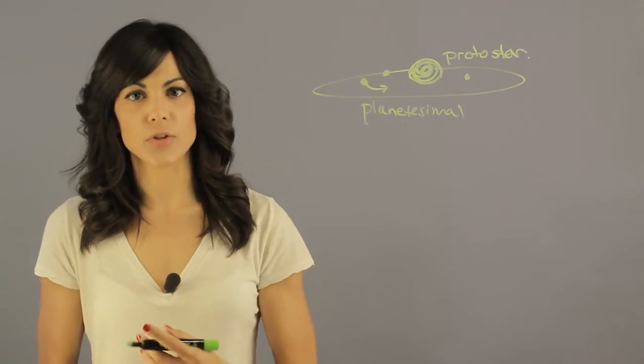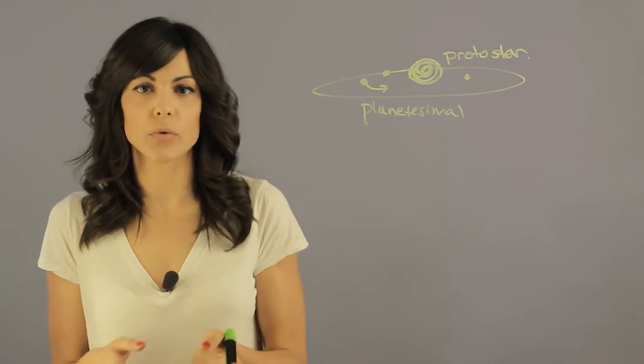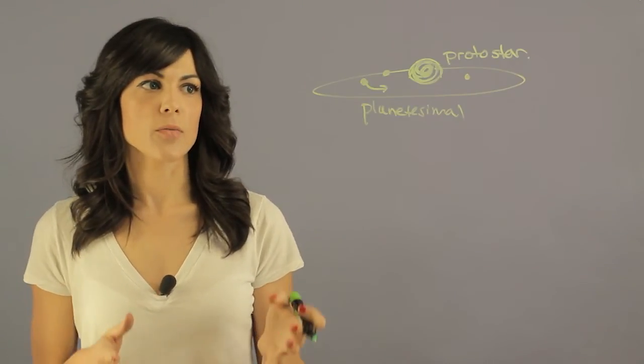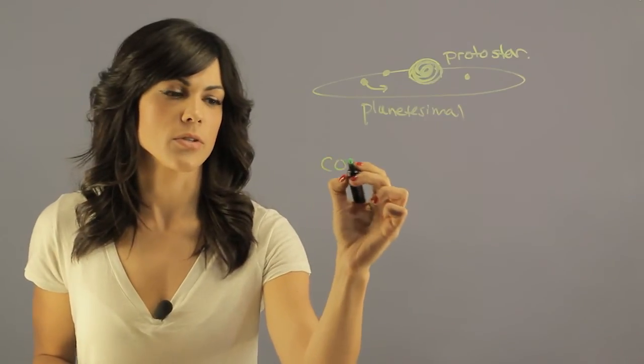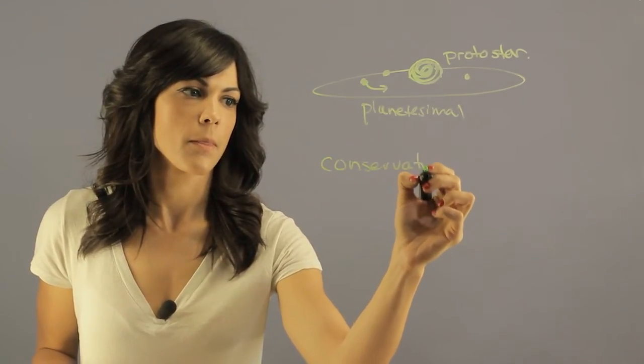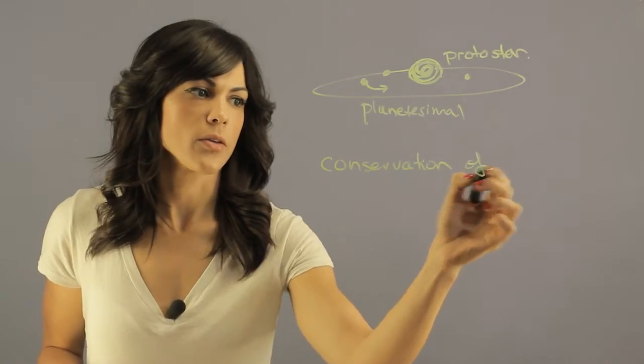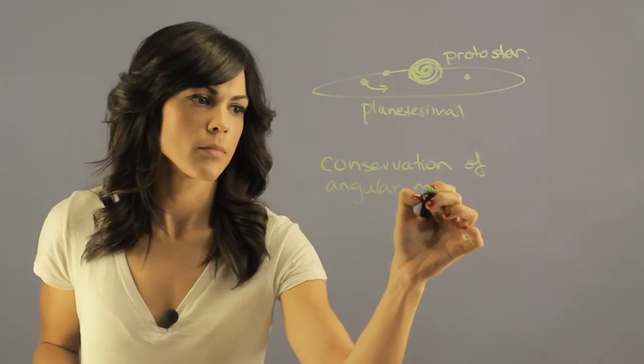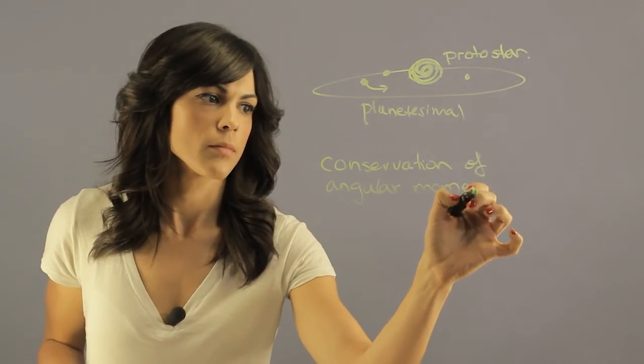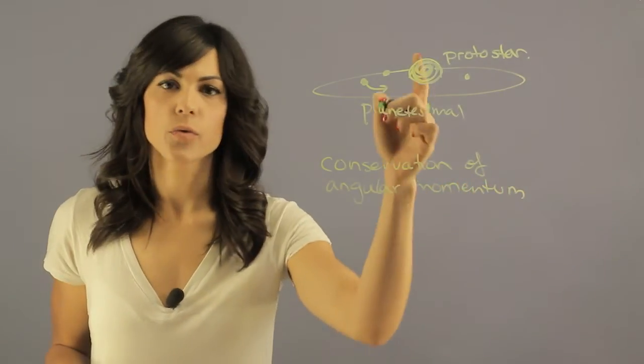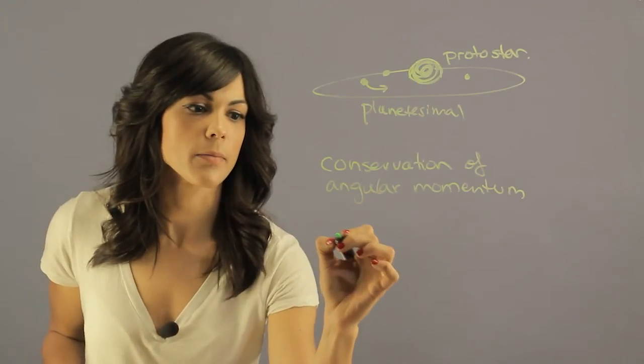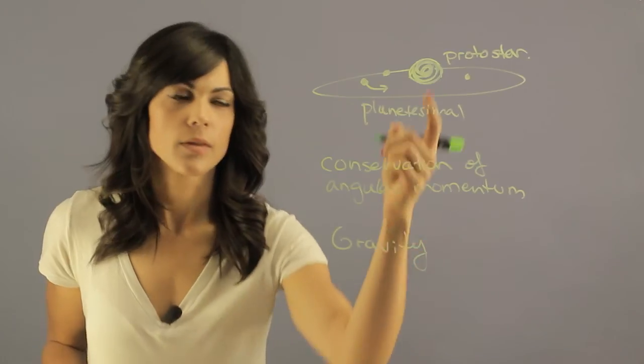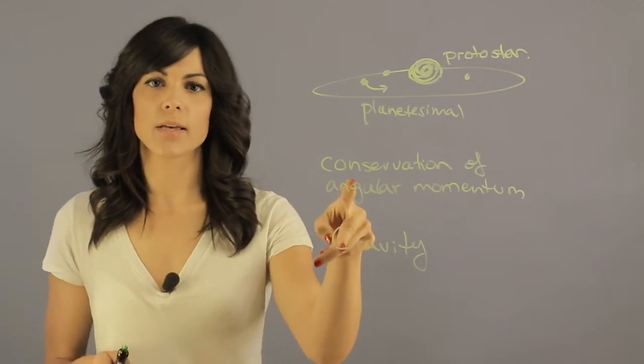So a lot of the motion comes from conservation of angular momentum and the central gravitational force from the planet. So gravity, and those are the two main things that the Sun can do that really tailor the motions of the planets around it.